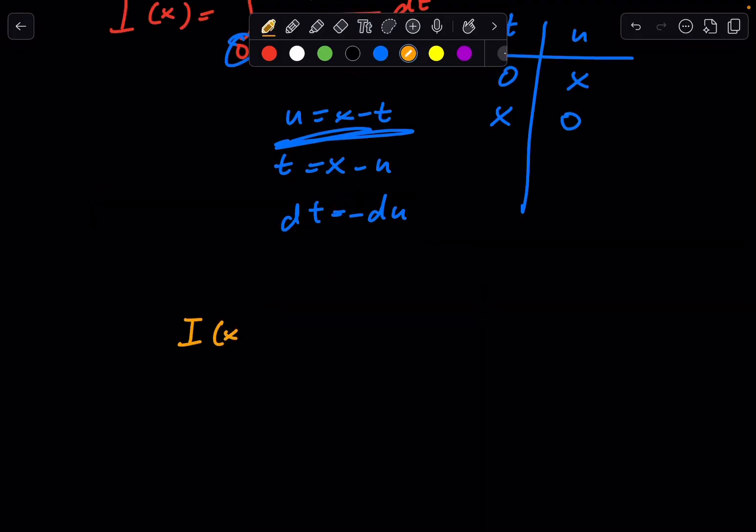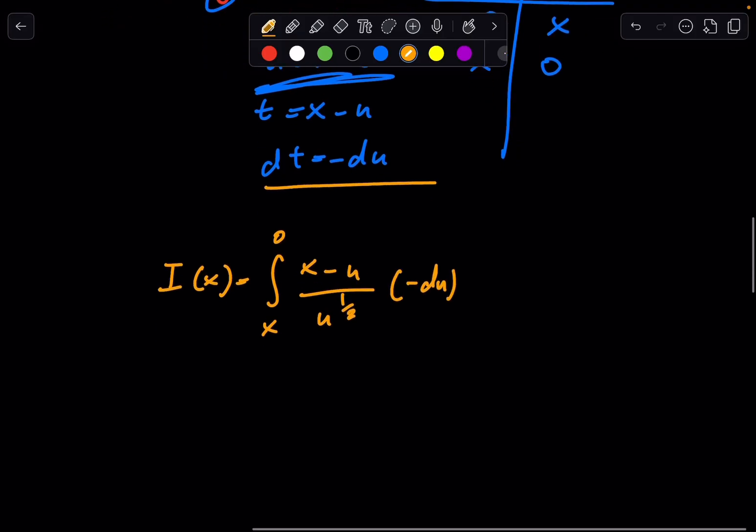So, we can write our I(x) to be such. This is equal to the integral from x to 0, because our bounds swapped, of (x minus u) all over u to the 1/2 power. And then, remember, dt is negative du, so we do negative du here. But I don't like x being in the lower bound, because usually that's not very typical, so I'm going to swap this.